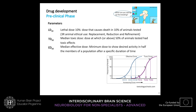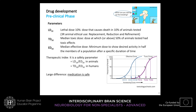In the preclinical phase, important parameters include the lethal dose 10% (LD10) — the dose causing death in 10% of animals tested (formerly LD50, but now attention to the 3Rs — replacement, reduction, and refinement of animal testing — guides this); the median toxic dose (TD50), above which more than 50% of animals show toxic effects; and the ED50 or median effective dose, the minimum dose showing desired activity in half the population after a certain time. These parameters define the therapeutic index of a drug — the farther apart these curves are, the safer the medication.